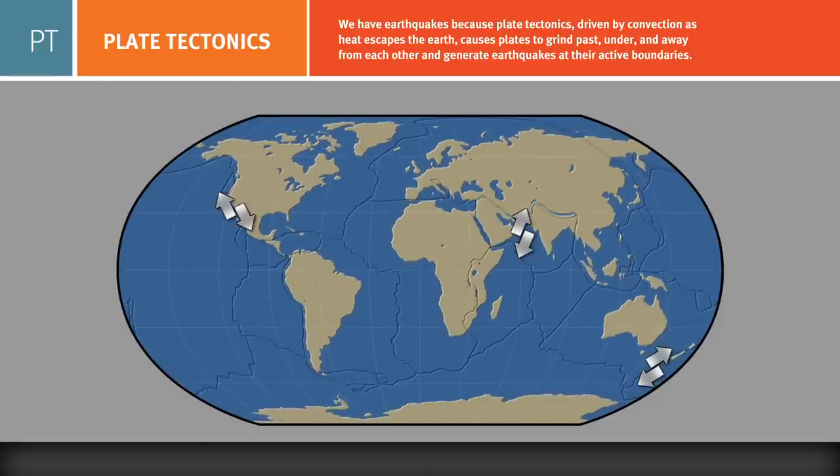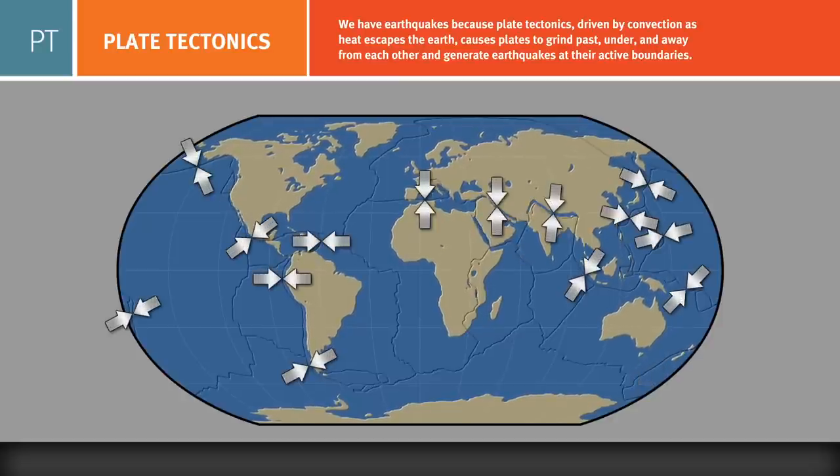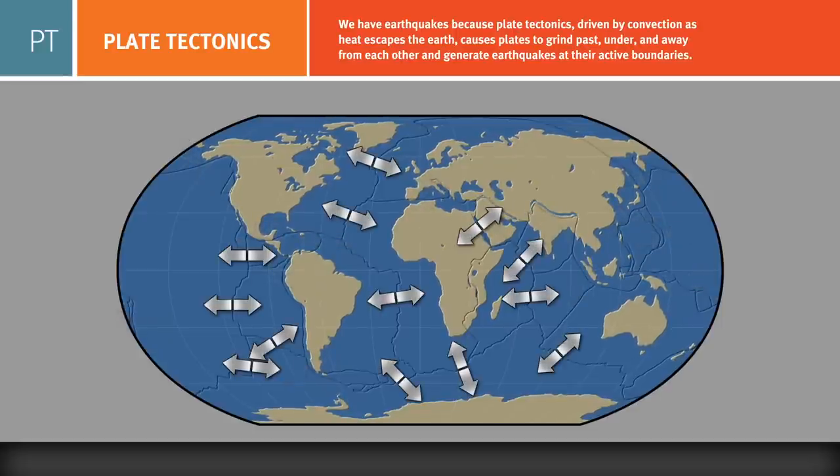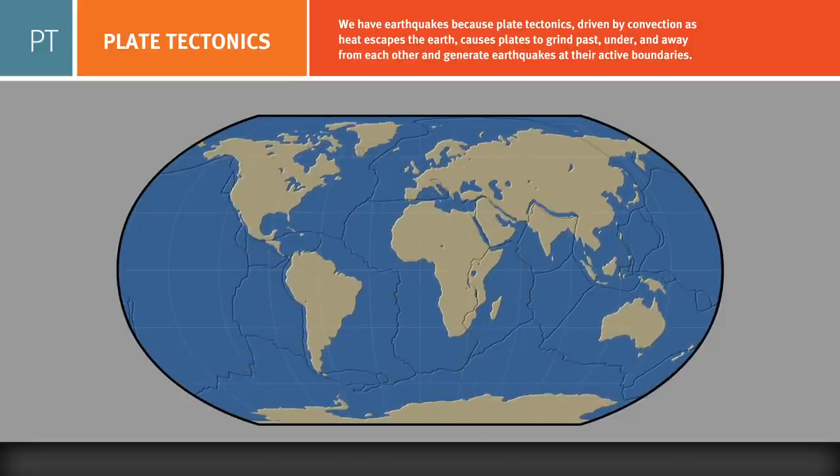At transform boundaries, plates slide past one another and form strike-slip faults. At convergent boundaries, continents collide and form mountains, or one plate slides beneath another and forms a subduction zone. At divergent plate boundaries, plates move apart and form rifts within continents, or mid-ocean ridge spreading centers in the oceans.